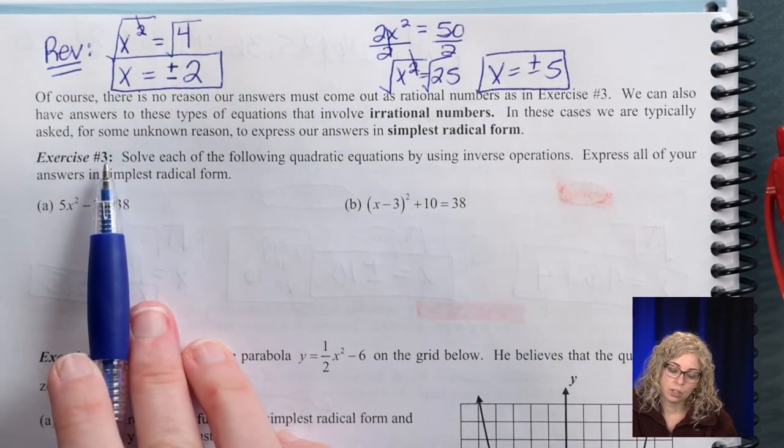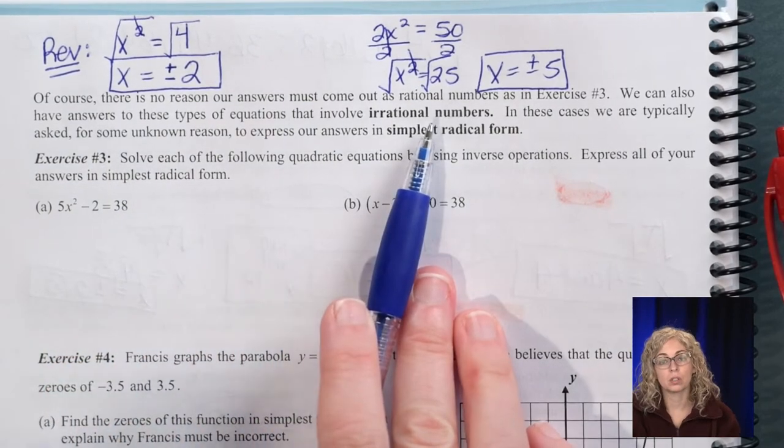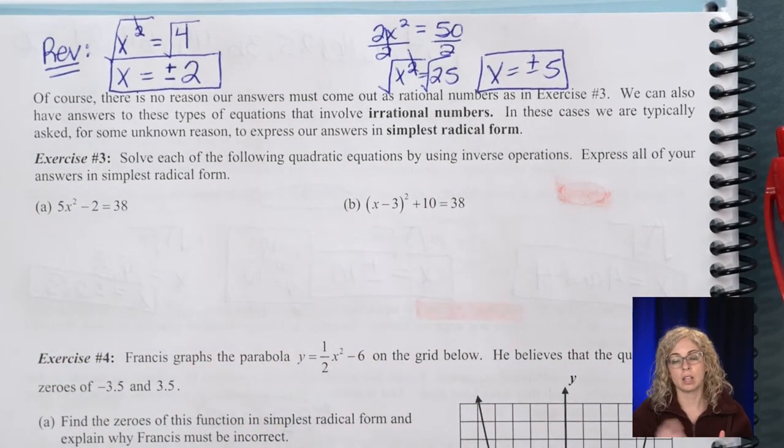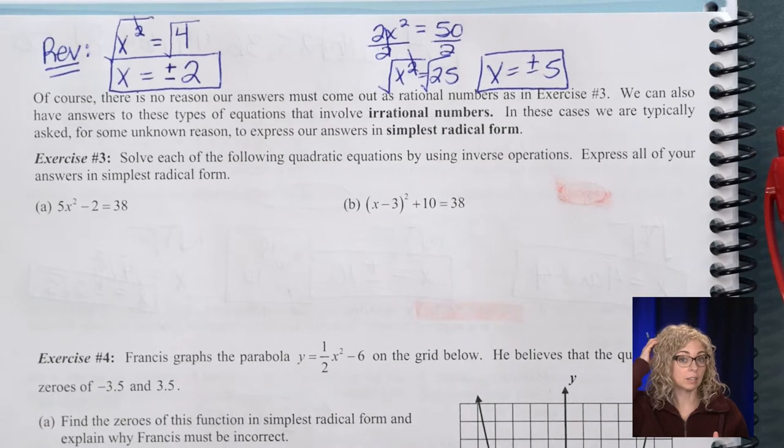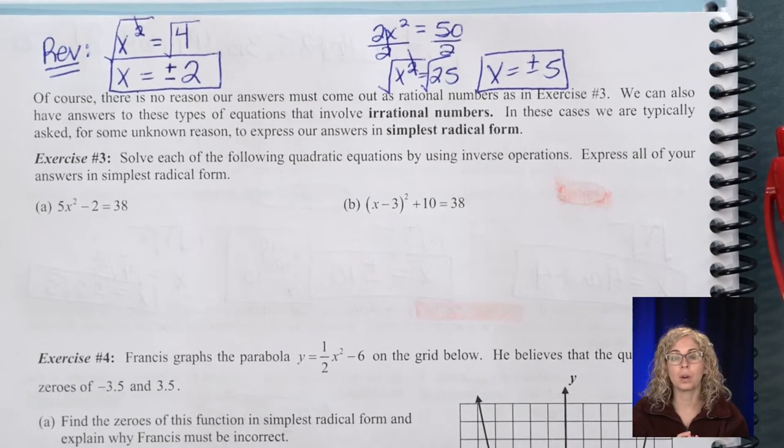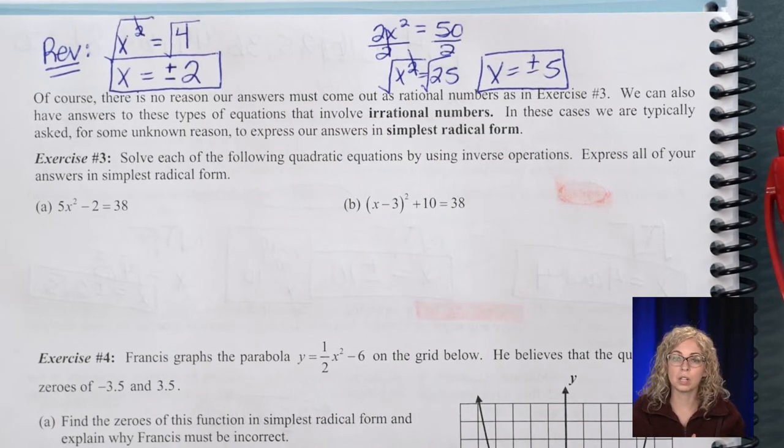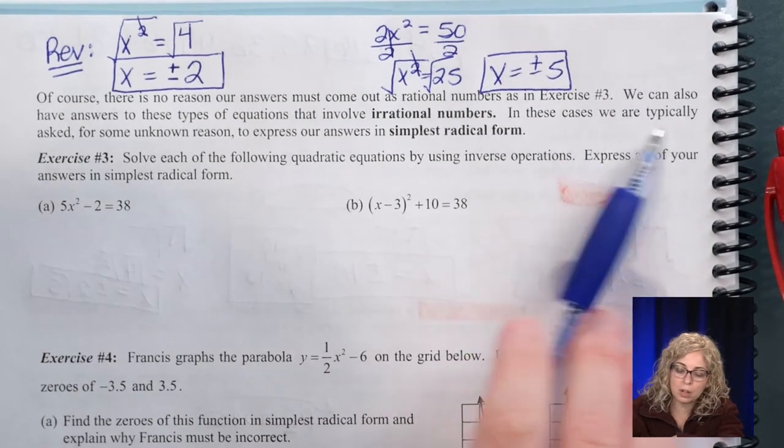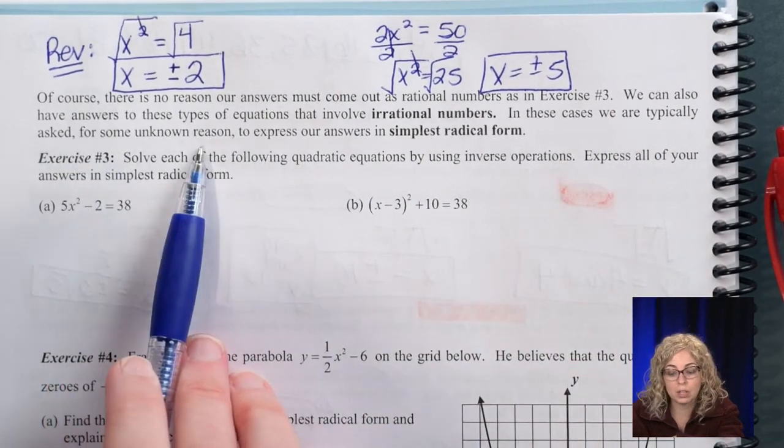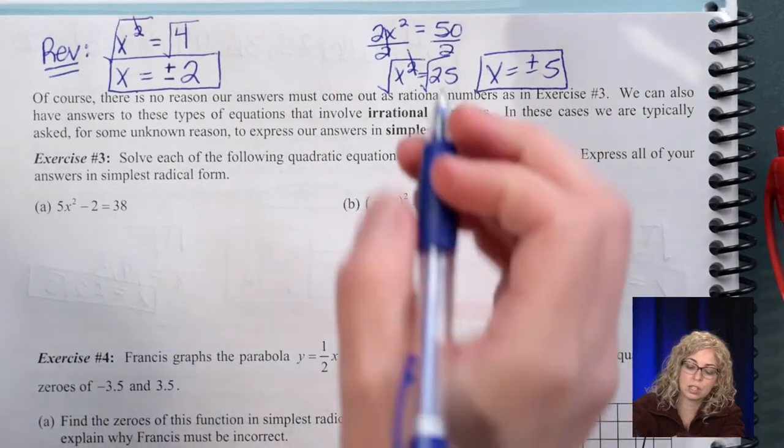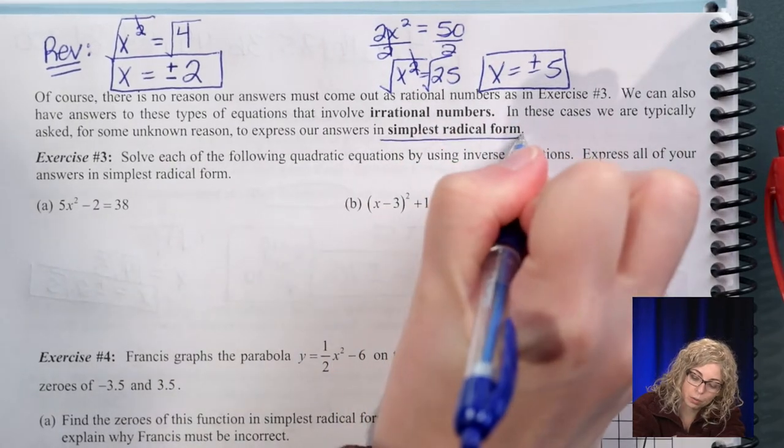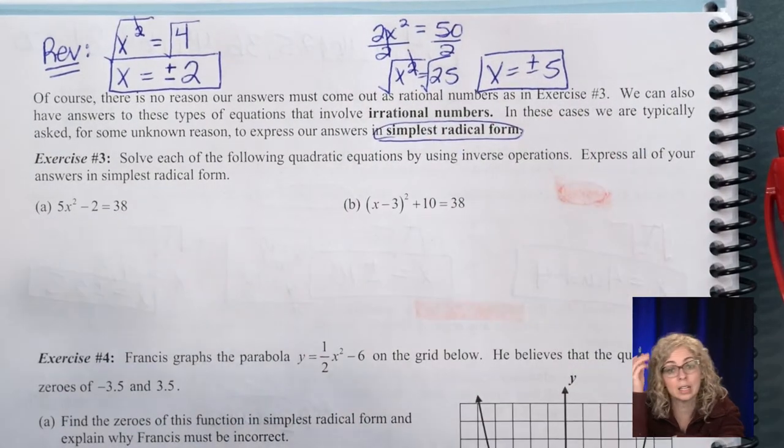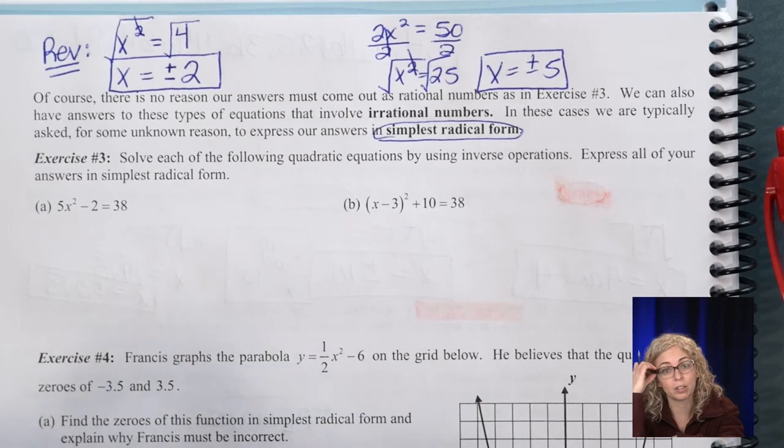We can also have answers that are irrational numbers. So we did answers last class, or on Monday, in this online learning environment, that our answers were all rational numbers. So today we're going to have answers that have radicals in them or are irrational. In these cases, we are typically asked for some unknown reason to express our answers in simplest radical form. So that right there is a hint that your answer is going to have a radical in it.